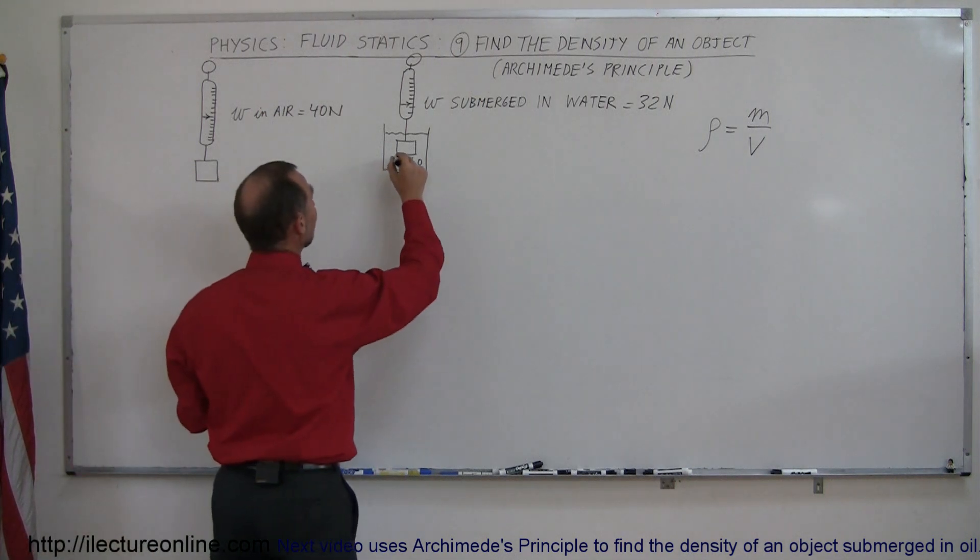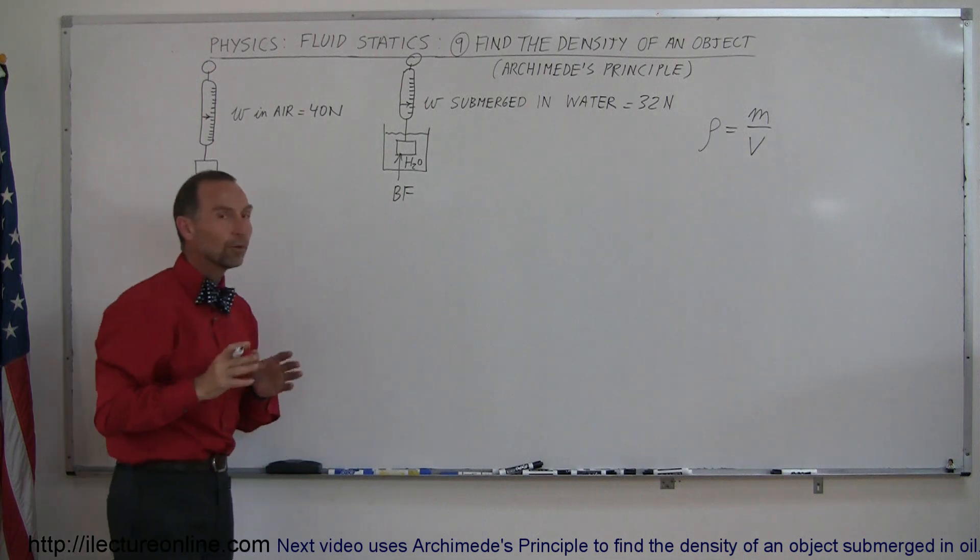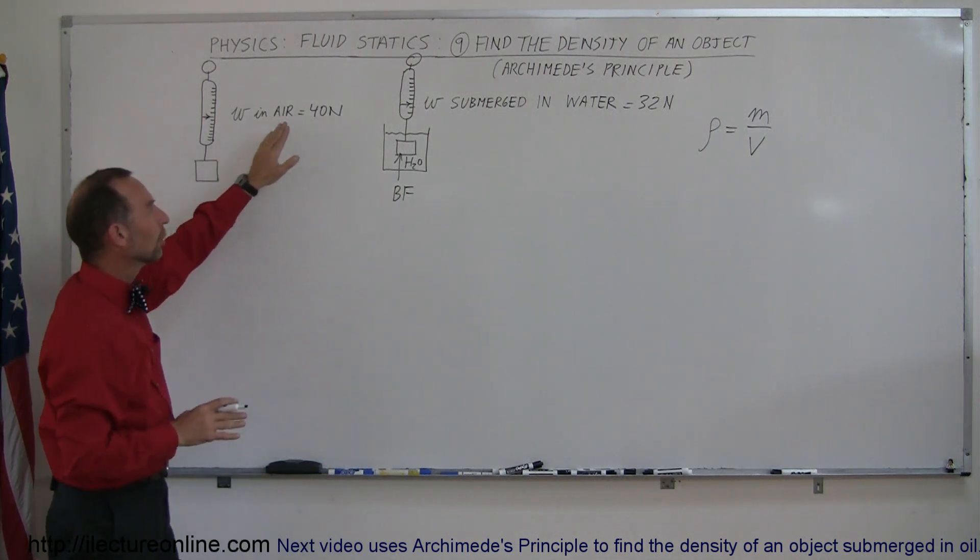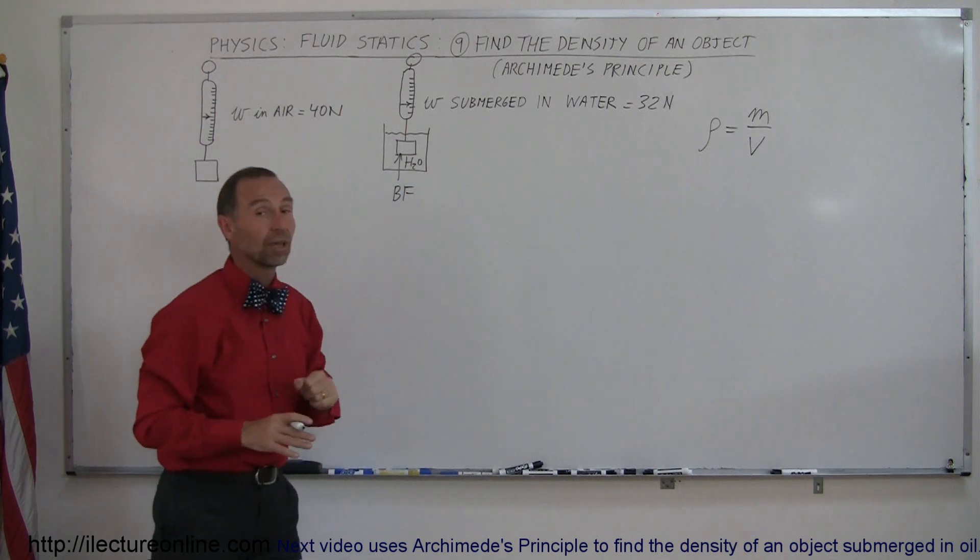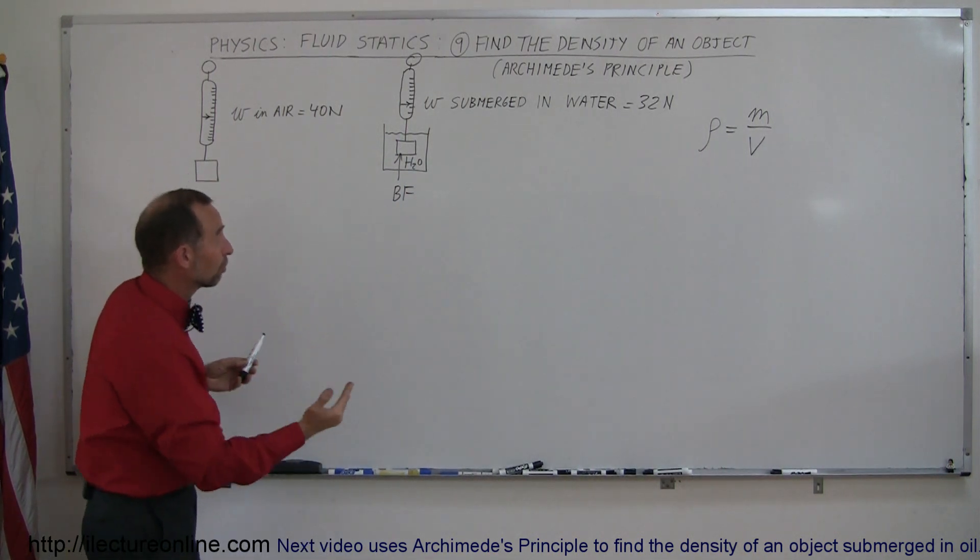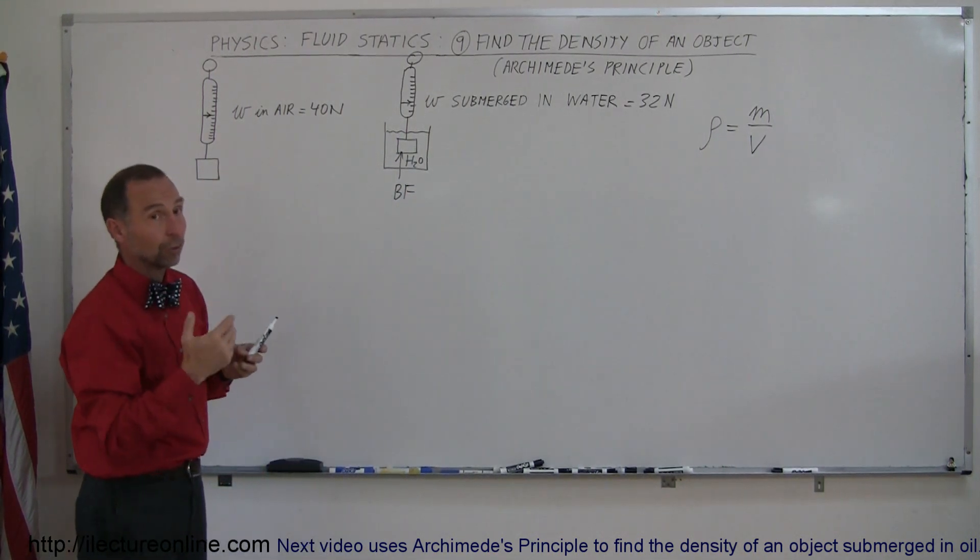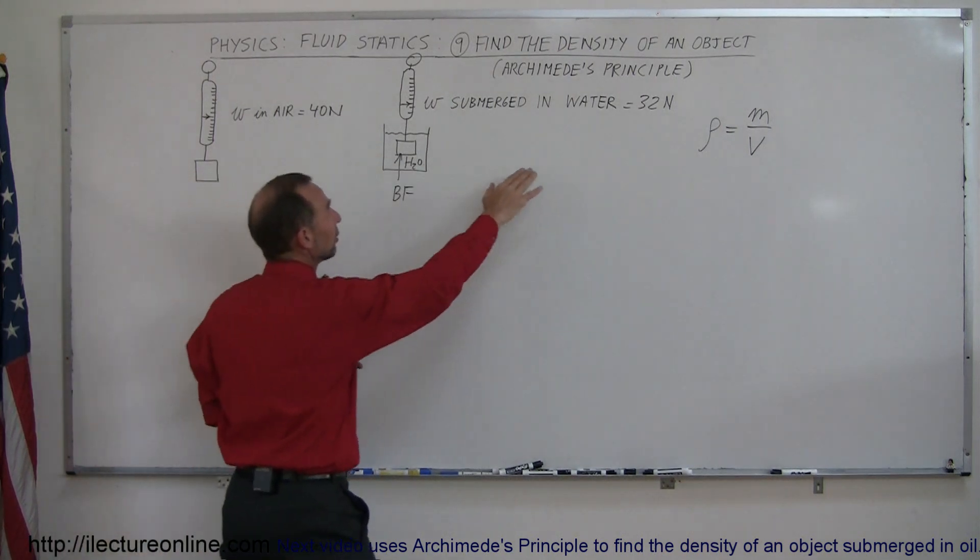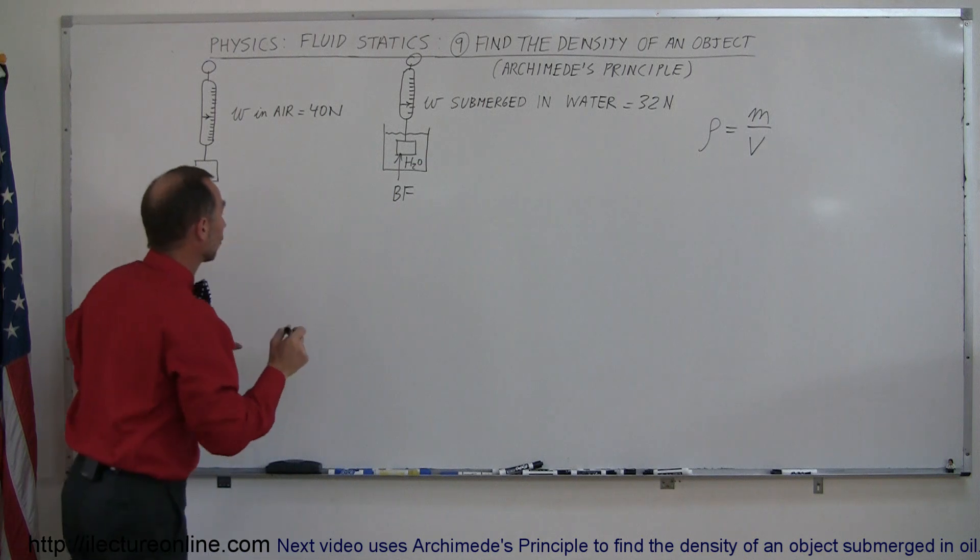Because inside the liquid, it experiences what we call the buoyancy force. And the buoyancy force is equal to the difference in the weight as it's measured in the air to the weight that it's measured as it's submerged in the water, because the buoyancy force pushes back with a force of 8 Newtons, so therefore something that would normally weigh 40 Newtons now only weighs 32 Newtons.